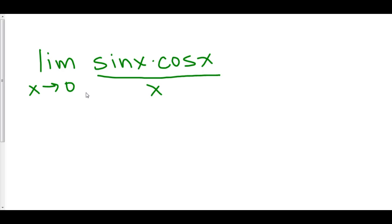Well, we know the limit as x approaches zero of sine of x over x. So, we can pull that out. Let's rewrite this as the limit as x approaches zero of sine of x over x times the limit as x approaches zero of cosine of x.